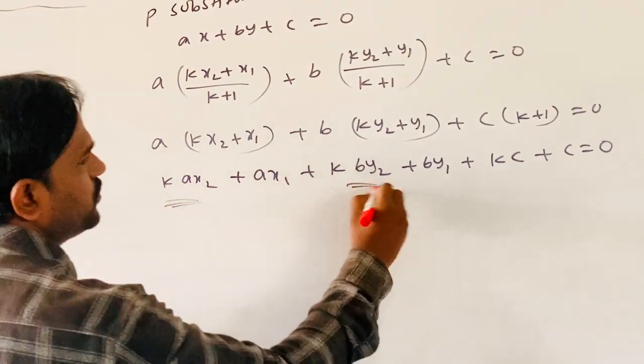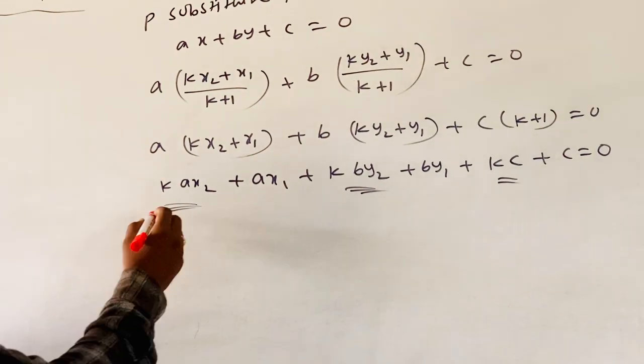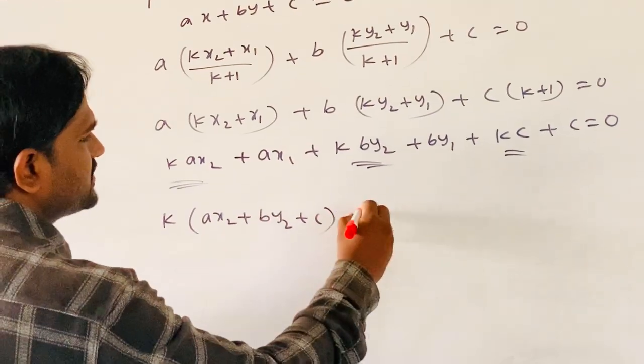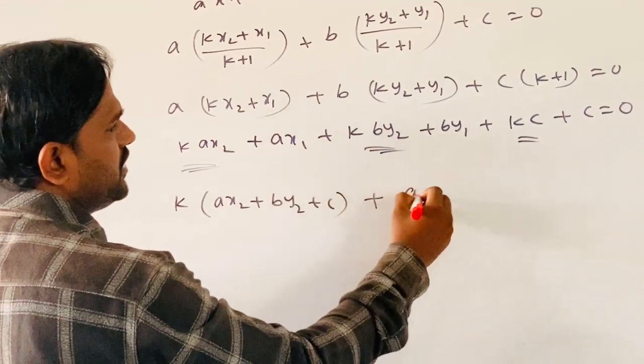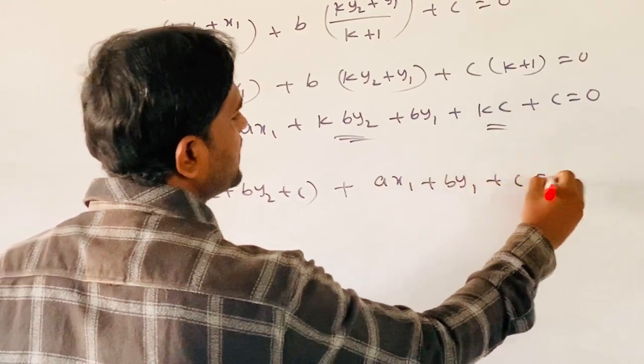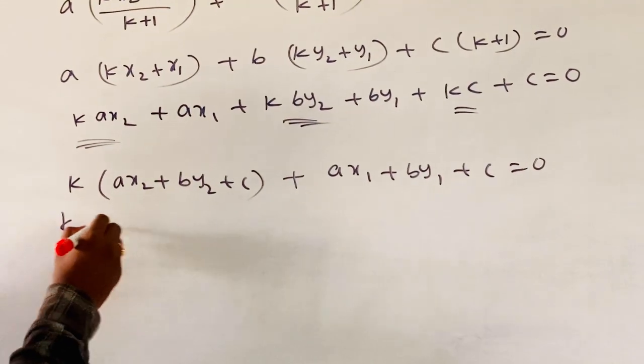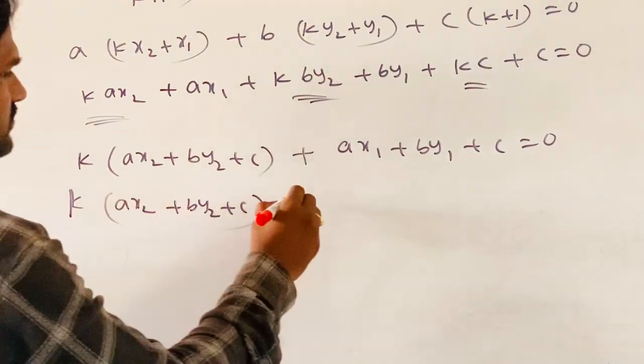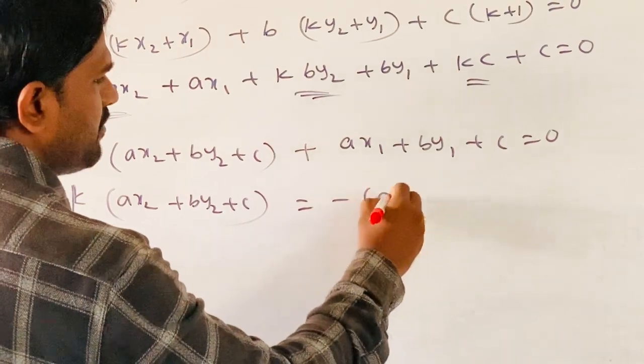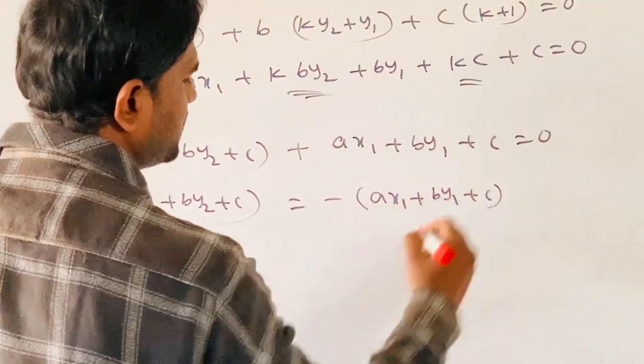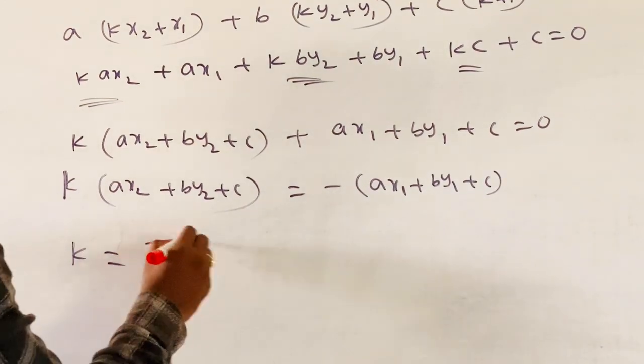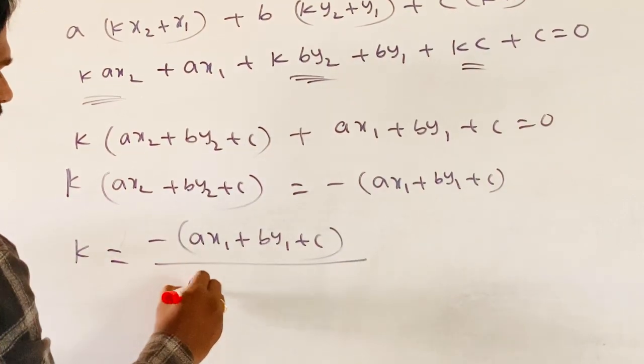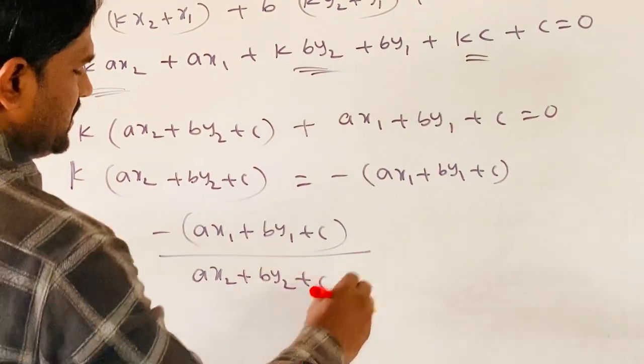Observe, three terms have K common: K(AX2 plus BY2 plus C) plus (AX1 plus BY1 plus C) equals 0. Therefore, K(AX2 plus BY2 plus C) equals minus (AX1 plus BY1 plus C). So K equals minus (AX1 plus BY1 plus C) divided by (AX2 plus BY2 plus C).